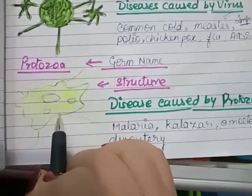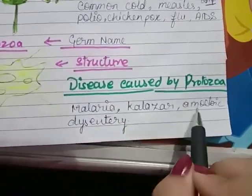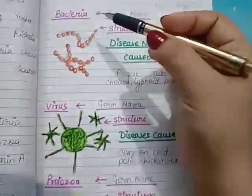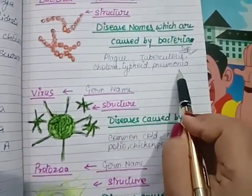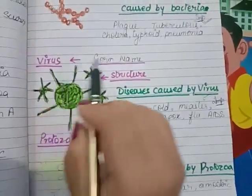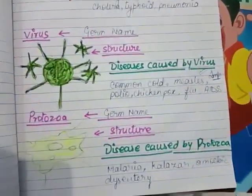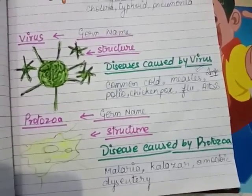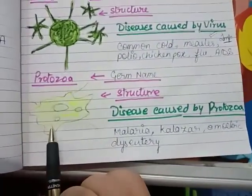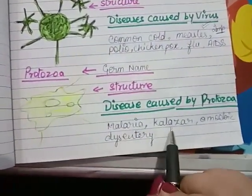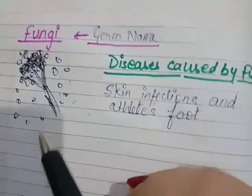The next microorganism is protozoa. The germ name is protozoa. This is the structure of the protozoa. The diseases caused by protozoa are malaria, kala-azar, and amoebic dysentery. To recap: bacteria causes plague, tuberculosis, cholera, typhoid, and pneumonia. Virus causes common cold, measles, polio, chickenpox, and flu. Protozoa causes malaria, kala-azar, and amoebic dysentery — this is known as protozoal disease.